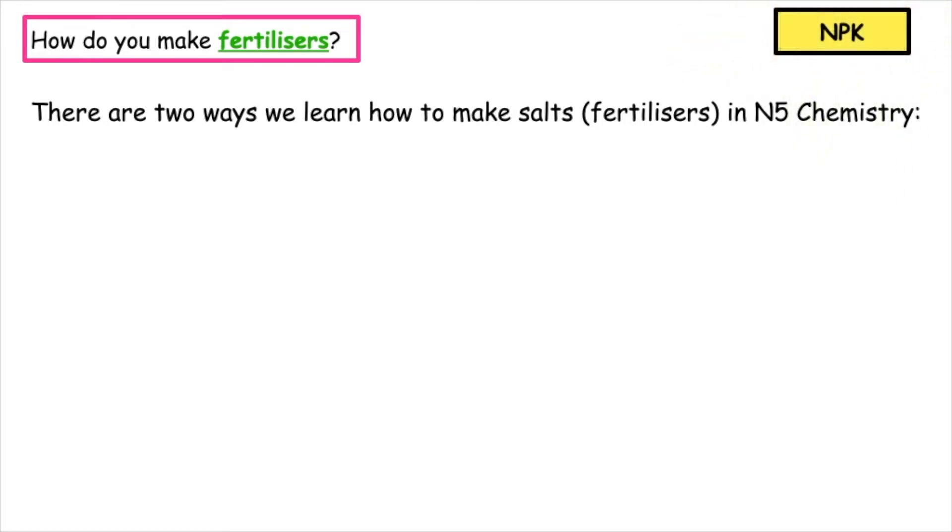So how do you make fertilisers? There are two ways we learn how to make salts, fertilisers, in National 5 chemistry. The first way is reacting metals with acids.